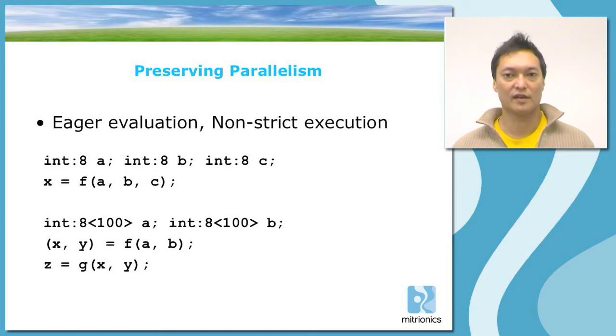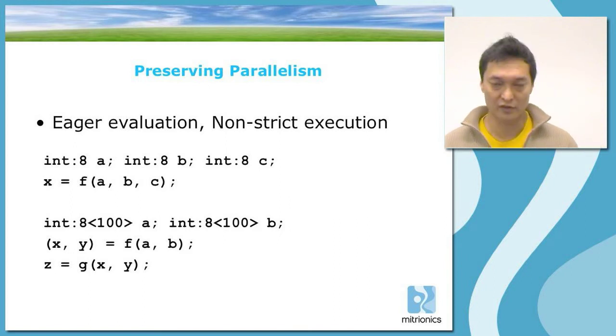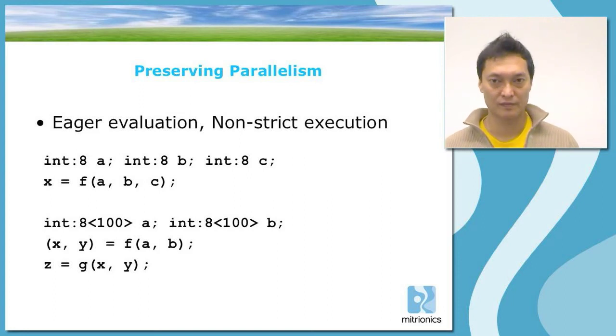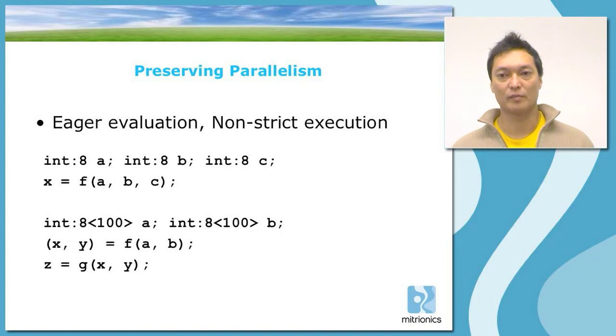So if we pretend that f contains a conditional statement, and depending on the result of that condition, c will not be needed or it will be needed, then the function f can be fully executed without ever having c computed if that condition evaluates to the right value. Non-strict execution can be a very powerful way of achieving parallelism, which is seen in the example below.